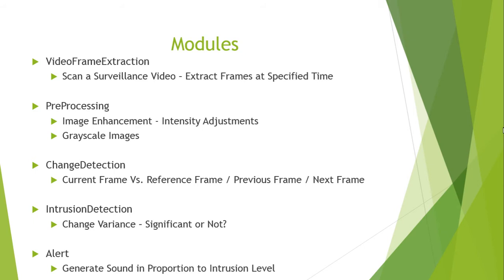Once you have extracted the frames, you perform preprocessing. Preprocessing means improving the quality of an image. There are two types: geometric adjustments and radiometric adjustments. Since my images are all video frames in the same linear scale, I perform image enhancement by adjusting intensities — I brighten the images, overshadow a few insignificant changes, and convert the images to grayscale to avoid complications from color channels.